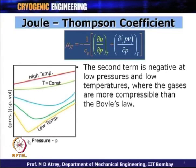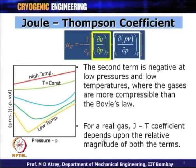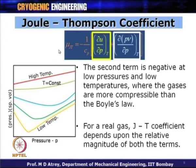This is where we find the temperature and pressure above which expansion will not result in cooling, while in the other region the gas will cool during JT expansion. For a real gas, the Joule-Thompson coefficient depends upon the relative magnitude of both these terms — the sign of the bracket determines whether mu_JT is positive, negative, or zero.